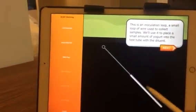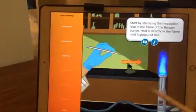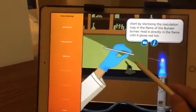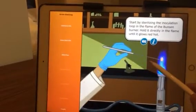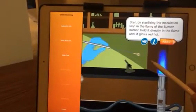This is an inoculation loop. Start by sterilizing the inoculation loop in the flame of the Bunsen burner. Hold it directly in the flame until it glows red hot.